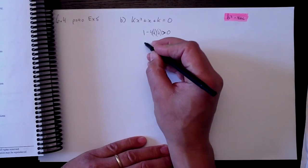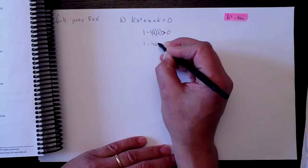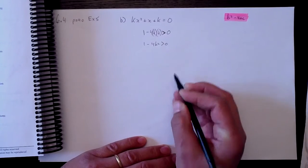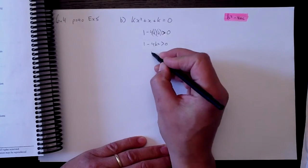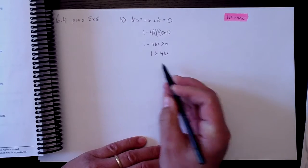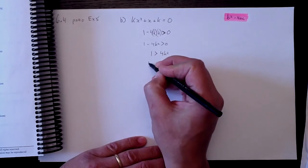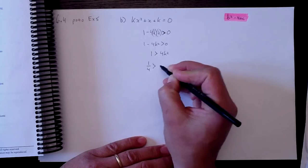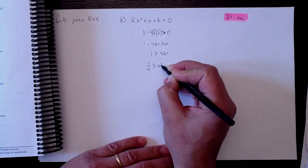So let's put that together. I've got 1 minus 4k squared is greater than zero, and if I subtract 4k squared from both sides, I've got 1 is greater than 4k squared, and if I divide both sides by 4, I get 1 over 4 is greater than k squared.